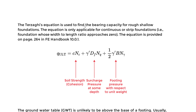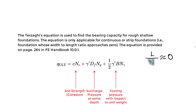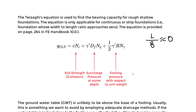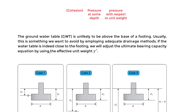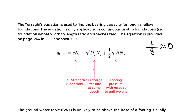A continuous or strip foundation is one whose width-to-length ratio approaches zero — the length divided by B approaches zero. The Terzaghi equation on page 264 is used to find bearing capacity for rough, shallow foundations and is only applicable for continuous or strip foundations. The equation accounts for soil cohesion strength, surcharge pressure at depth, and footing pressure with respect to unit weight. Groundwater effects may also apply.